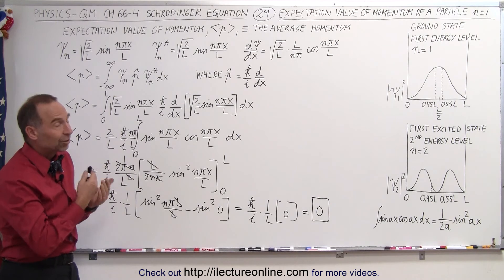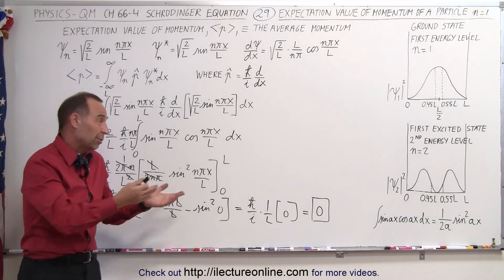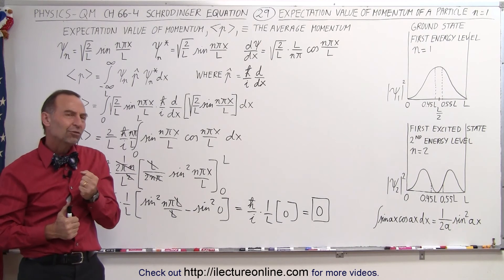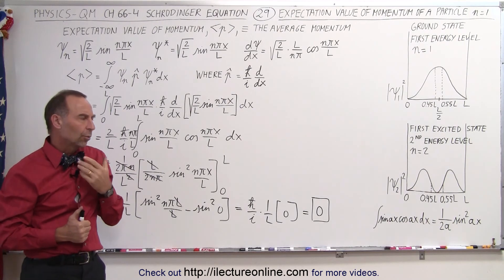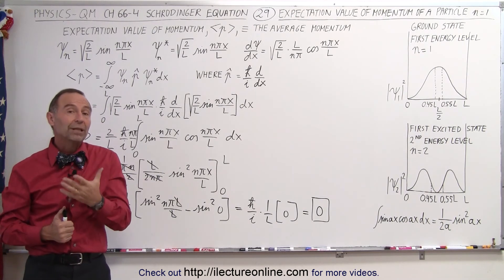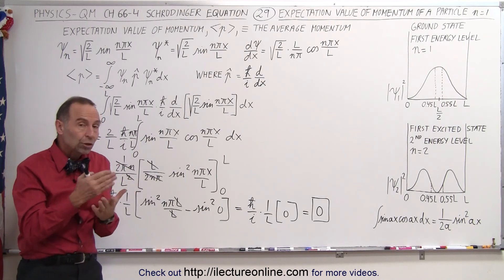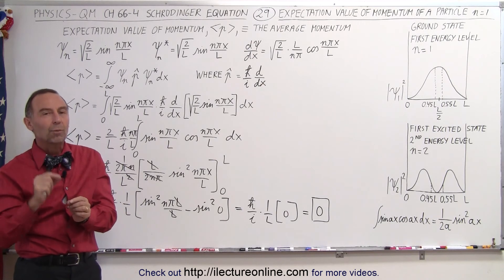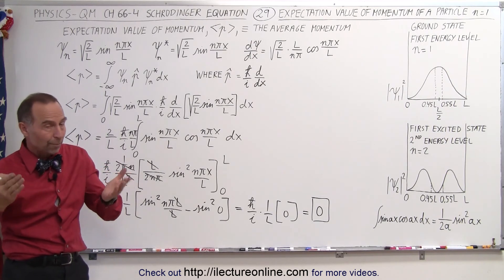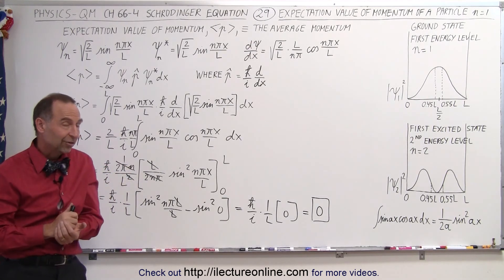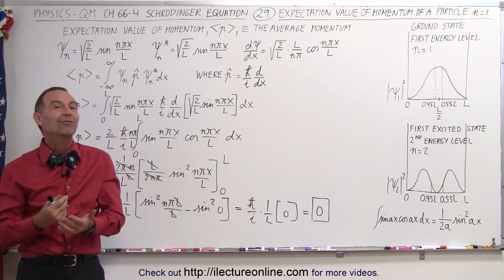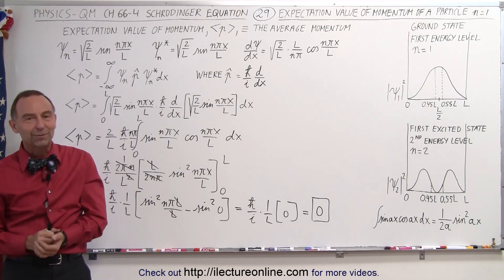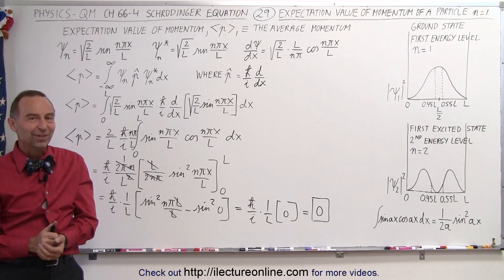So instead of talking about the expectation value of the momentum, which we now realize is zero and doesn't tell us much, maybe we should find the eigenvalues — in other words, the values of the momentum that do not depend on direction. From that we can find the actual momentum in a single direction, or the magnitude, which will tell us more than just the expectation value of the momentum of the particle.